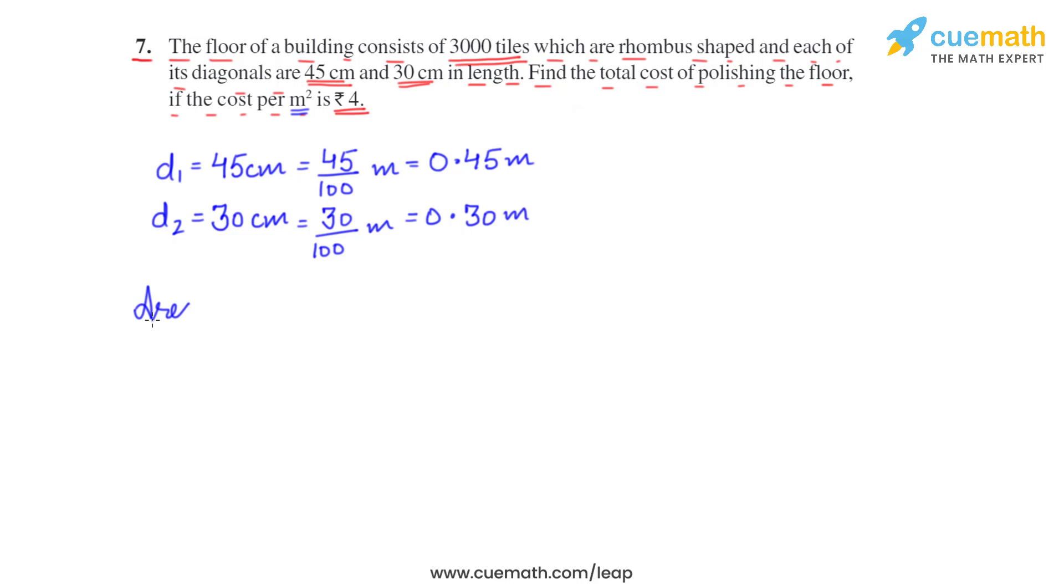So area of one tile is equal to, as they are rhombus shaped, half into the diagonals are given. So half into D1 into D2, that is half into 0.45 into 0.30 square meters. The answer comes out to be 0.0675 square meters. So this is the area of one tile.